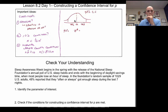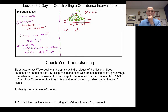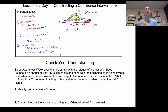For a 90% confidence interval, 90% of data falls in the middle green region. On either side, everything left over equals 0.10, or 10% of data. Because the curve is symmetrical, we have 0.05 on each tail. So I need the Z score where the area under the curve to the left is 0.05.